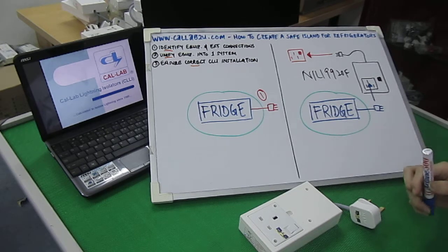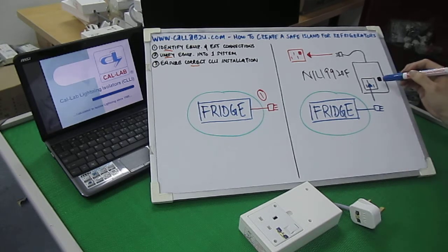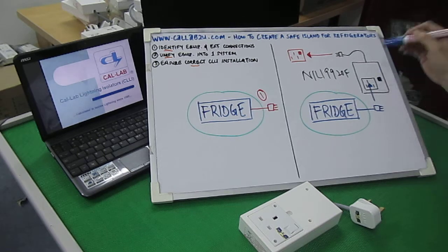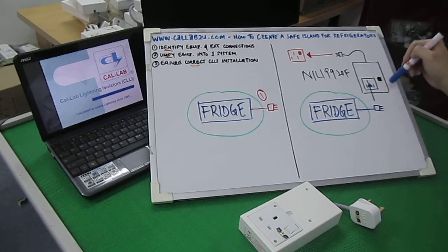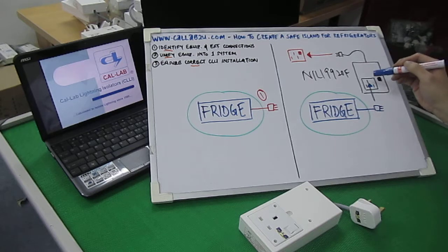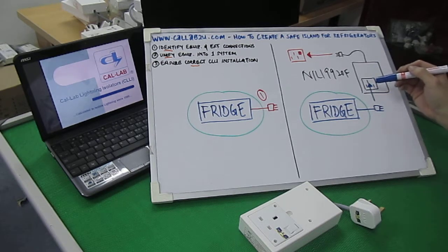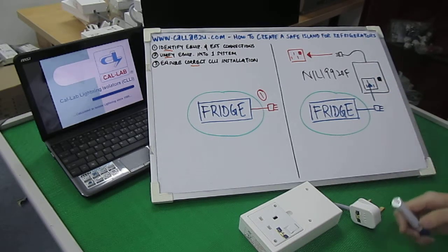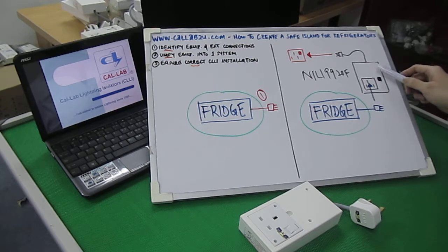Now pay attention: not to use a power strip or power bar in conjunction with the NILI, because this particular isolator is dedicated solely for a refrigerator or standalone equipment. Okay, so that's using the correct lightning isolator model and the correct installation.